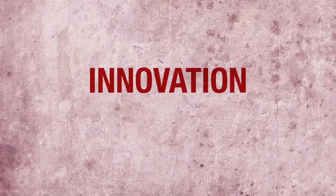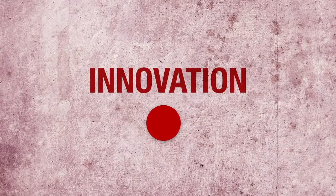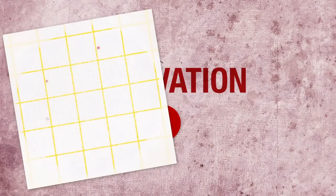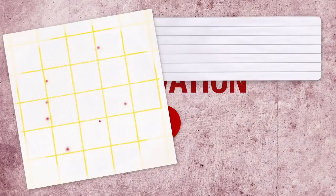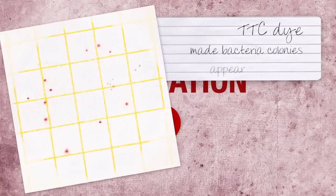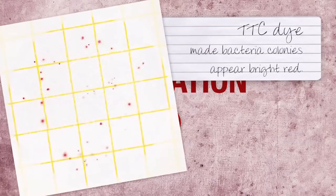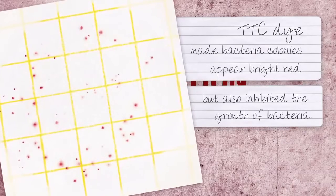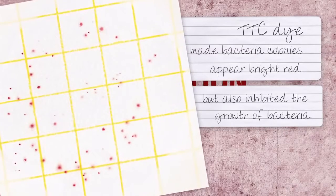Another key innovation had to do with the Petrifilm dot's signature color. At the time of development, it was commonly known in the food safety industry that a special TTC dye made bacteria colonies appear bright red, but also inhibited the growth of certain bacteria, giving the dye limited usefulness as a total plate count indicator.